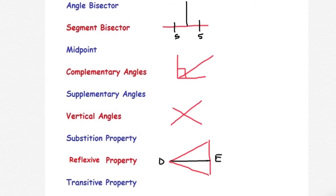Complementary angles are two angles that add up to 90. So I can say this is 40 and this is 50. These two angles would add up to 90.